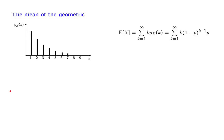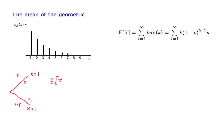The trick is to break down the expected value calculation into two different scenarios. Under one scenario, we obtain heads in the first toss; in that case, the random variable X equals 1, and this scenario occurs with probability p. Under the other scenario, with probability 1 minus p, we obtain tails in the first toss, and our random variable is strictly larger than 1. The expected value of X consists of two pieces: we have a first toss no matter what, and then we have the number of remaining tosses, which is X minus 1. This follows by linearity of expectations.